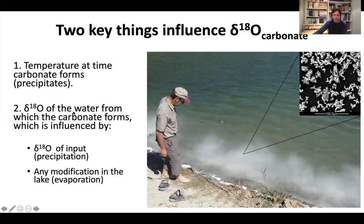Firstly, the temperature effect for carbonates: for every degree centigrade of temperature increase, the delta-18O — the oxygen isotope composition of the carbonate that forms from that water — will be 0.24 per mil lower. So for every one degree C temperature increase, the delta-18O of the carbonate will be 0.24 per mil lower.